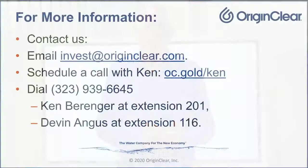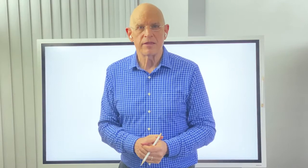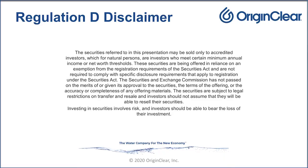To know more about it, please feel free to email invest at originclear.com. You can always talk to Ken Barringer, just oc.go slash Ken in your browser. Or, of course, you can call us, and the number, I remember it well, is the old LA number, 323-939-6645. And you can get Ken Barringer at extension 201, Devin Angus at extension 116. But, invest at originclear.com works great. And that email will eventually get to me if you want to talk to me. Love to hear from you about this. It's an exciting time for the company. Do join us. Thank you.